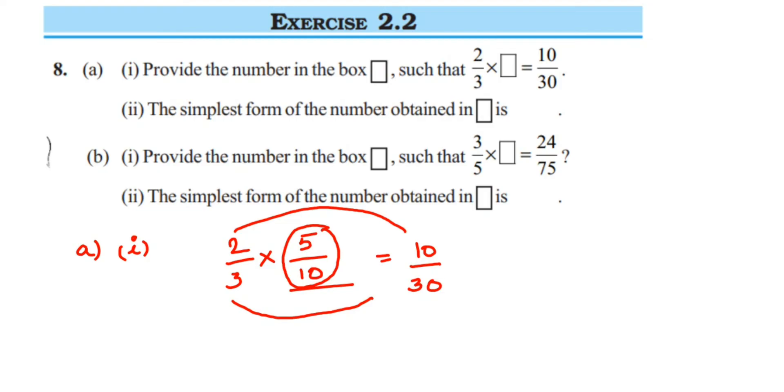Now the second question: the simplest form of the number obtained in the box is blank. This box is nothing but this answer from the first question. The answer was 5 by 10, so they're talking about 5 by 10 here. What is its simplest form?